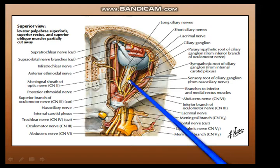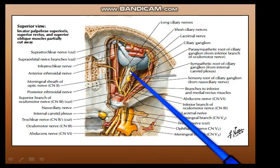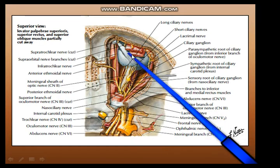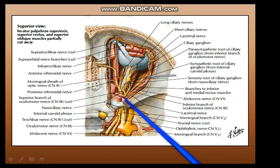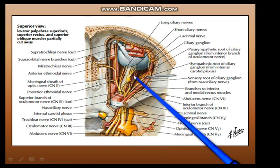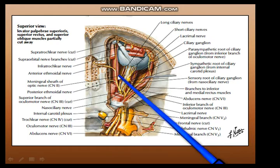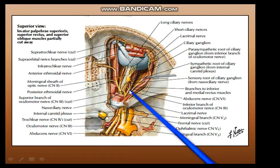The nasociliary nerve supports the ciliary ganglion, and from the ciliary ganglion you can see the short ciliary nerves. The upper division of the oculomotor nerve has been cut because it was supplying the superior rectus and levator palpebrae superioris — which have been removed. The lower division of the oculomotor nerve supplies the inferior rectus, inferior obliques, and the medial rectus — three muscles supplied by the lower division.